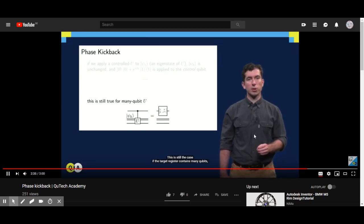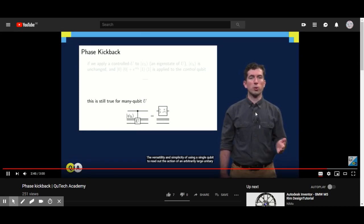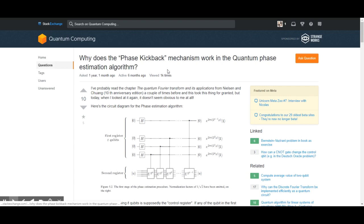This is still the case if the target register contains many qubits or other types of quantum systems. The versatility and simplicity of using a single qubit to read out the action of an arbitrarily large unitary is what makes phase kickback an important building block for quantum algorithms. It's literally a technique that allows you to get a peek on what the operation is doing, in the sense that it takes the phase of the overall relative phase of the system that the gate U is acting on and puts it to the one component of your control qubit. That's cool, that's definitely a useful concept.